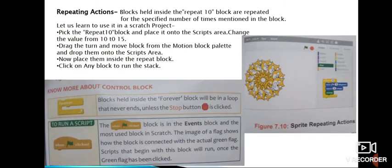Now, repeating actions. Blocks held inside the Repeat 10 block are repeated for the specified number of times mentioned in the block. Let us learn to use it in a Scratch project. Pick this Repeat 10 block and place it onto the script's area. Change the value from 10 to 15. Drag the turn and move block from the Motion block palette and now drop them onto the script's area. Now, place them inside the Repeat block. Click on any block to run this stack.